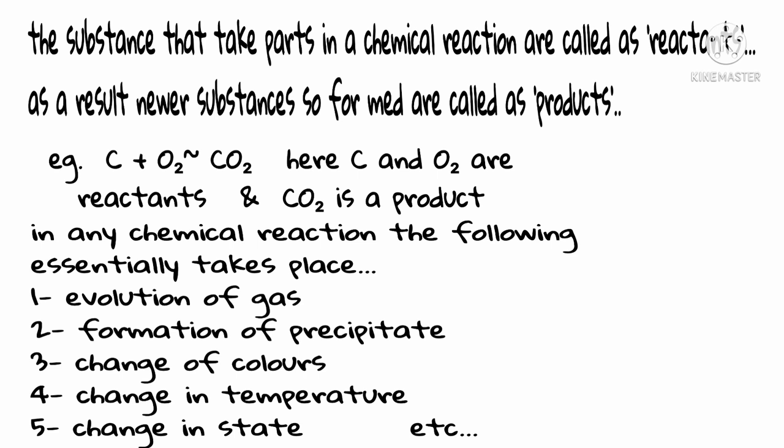In any chemical reaction, the following essentially takes place. First is evolution of a gas. Second is formation of precipitate. Third is change of colors. Fourth is change in temperature. Fifth is change in state of the body.